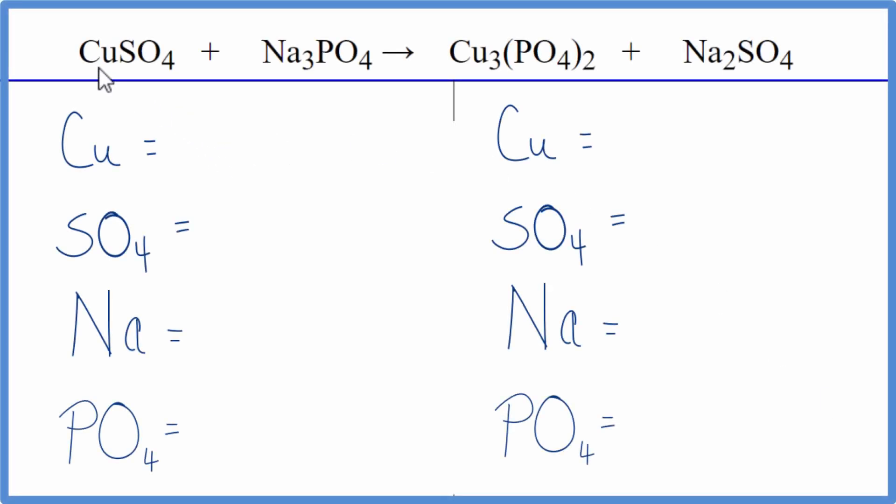To balance this double displacement reaction, we have copper 2 sulfate plus sodium phosphate. And we'll count the atoms up on each side and balance the equation.